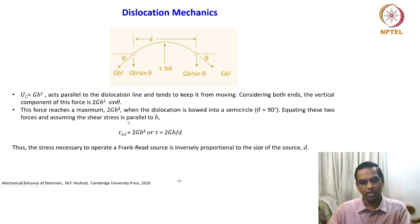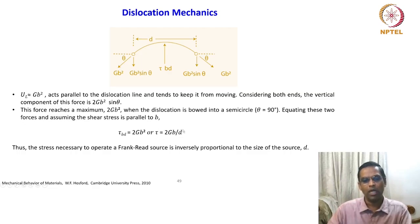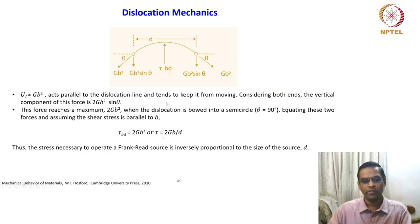The stress necessary to operate the Frank-Reed source is inversely proportional to the size of the source D. So the shear stress is inversely proportional to D. If D is small — meaning the two obstacles are placed very closely — then accordingly the shear stress required will be varied higher.